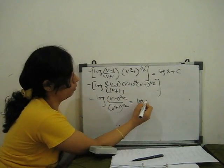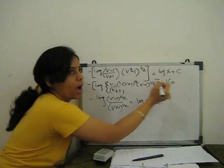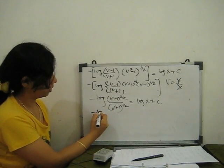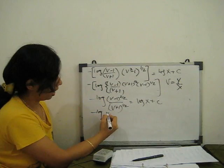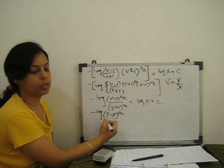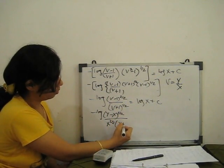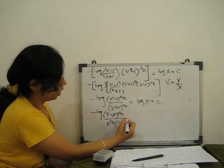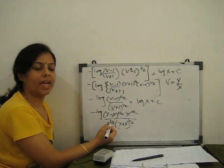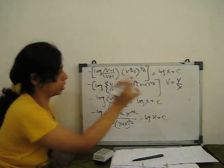Now substitute v = Y/X back. We replace v with Y/X: (Y/X − 1)^(3/2) / (X^(3/2)) in the numerator, and (Y/X + 1)^(1/2) / (X^(1/2)) in the denominator. This simplifies as the X^(1/2) terms cancel, leaving only X. Moving the negative log term to the other side and combining log X with log of the expression using log a + log b = log(ab): we get log|X · (Y − X)^(3/2) / (Y + X)^(1/2)| = log|X| + C.